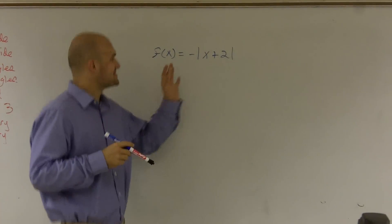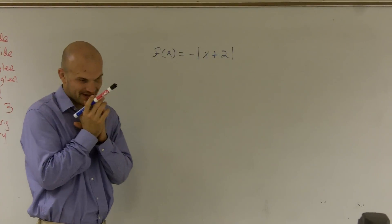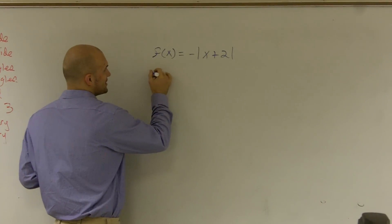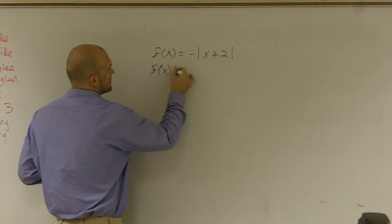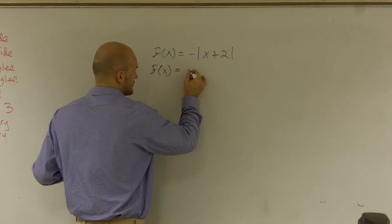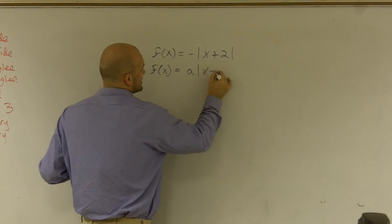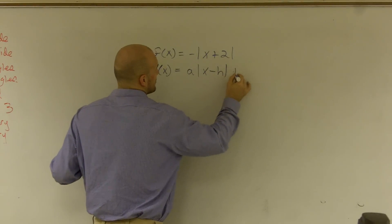What I'd like to do is show you how to graph an absolute value function. When graphing an absolute value function, there's a couple things we need to know. We have f(x) = a|x - h| + k.